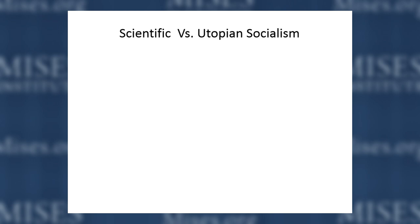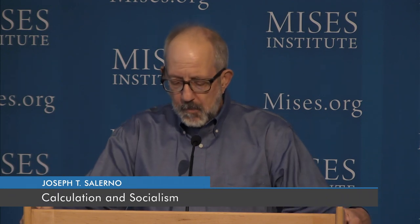Socialism started off in the 19th century. The initial group of socialists, the ones who got the most notoriety, were known as utopian socialists. Some of them were French and one was British: Charles Fourier, Henri Saint-Simon, and Robert Owen.